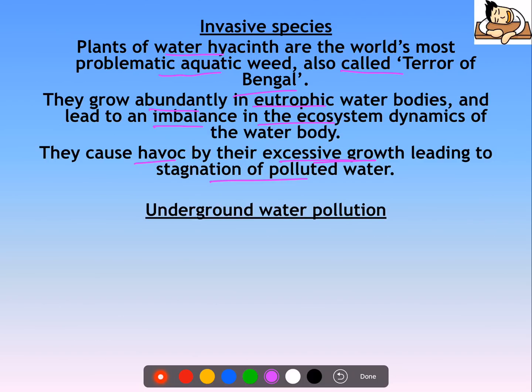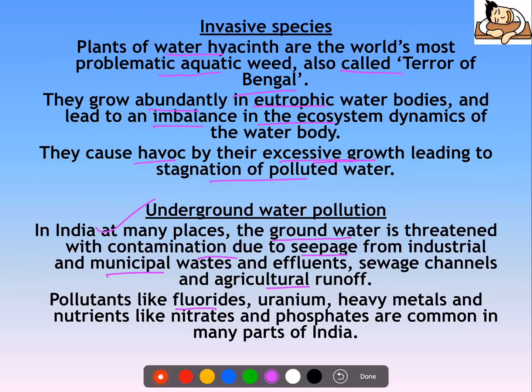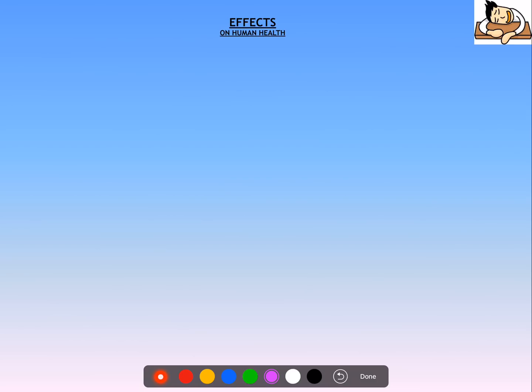Underground water pollution is also a concern. Groundwater is contaminated due to seepage from industrial and municipal waste, and from agricultural runoff through leaching. As a result, fluorides, uranium, heavy metals, and nutrients like nitrates and phosphates are common contaminants in many parts of India.